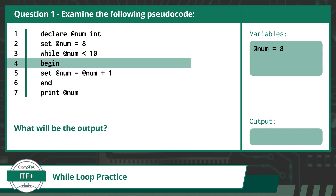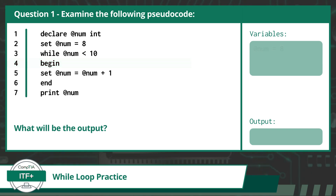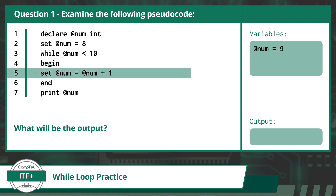The word begin on line 4 is only used here to mark the beginning of the looped code statements. On line 5, we will reassign the variable @num with the current value of @num plus 1, resulting in a value of 9.